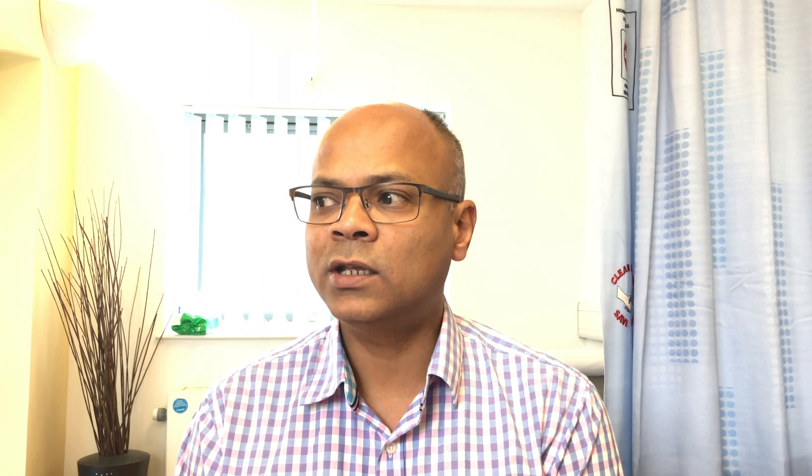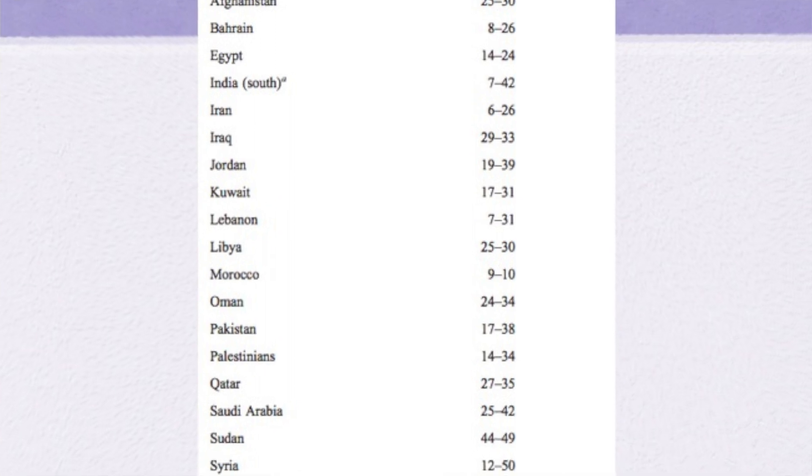Consanguinous marriages occur across all religions — Muslim, Christian, and Hindu. Per a world report conducted in 2011, looking at the Indian scenario, the Aryan Hindus of North India and Sikhs examine pedigrees for seven generations for males and five generations for females to ensure they are avoiding inbreeding.